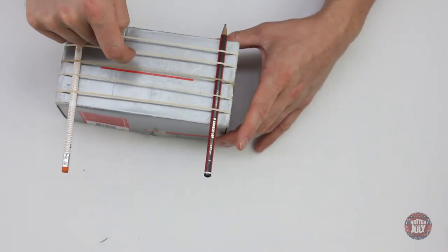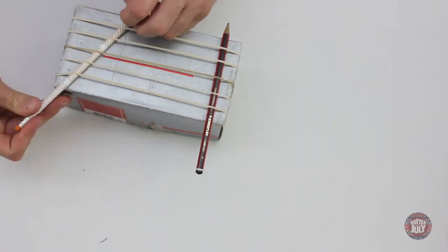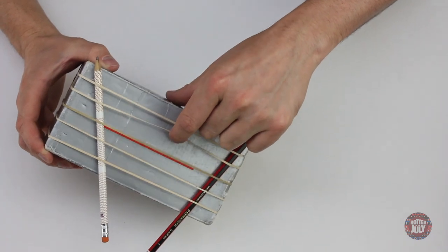Stretch the rubber bands like so to adjust the tuning. Not bad for a really simple instrument. But this type of instrument with rubber bands is really hard to keep in tune.